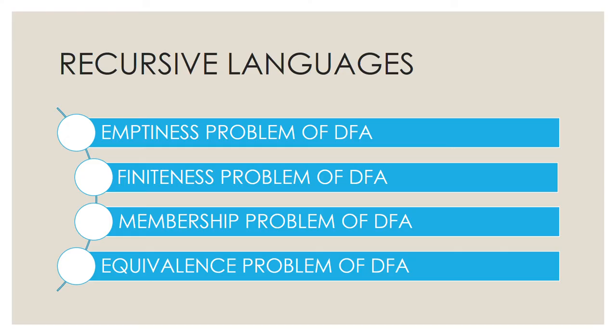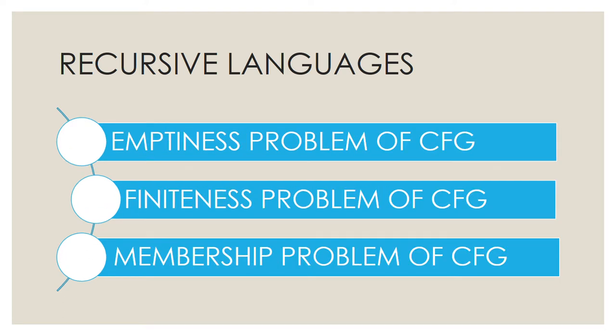The examples of recursive languages are: first, the emptiness problem of DFA — whether it accepts an empty language or not; second, the finiteness problem of DFA — whether it accepts a finite or infinite language; third, the membership problem of DFA — whether a particular string belongs to a DFA; and fourth, the equivalence problem of DFA. All these are recursive languages.